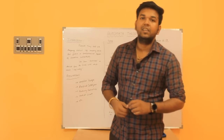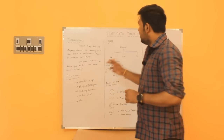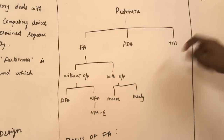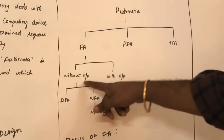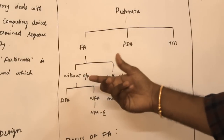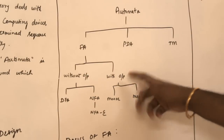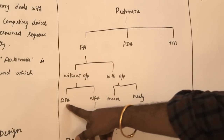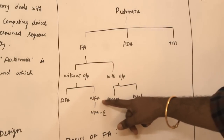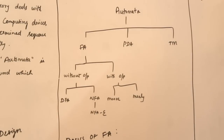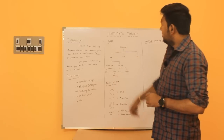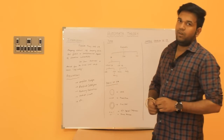The types of Automata are: Finite Automata, Pushdown Automata, and Turing Machine. Under Finite Automata, there are two types: without output, which is output-determined, and with output. Without output includes Deterministic Finite Automata (DFA), Non-Deterministic Finite Automata (NFA), and NFA with Epsilon. With output includes Moore Machine and Mealy Machine. These are the types of Automata.